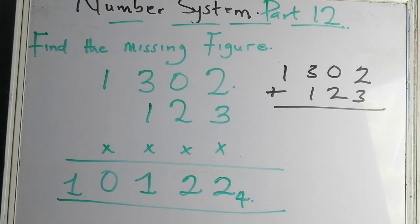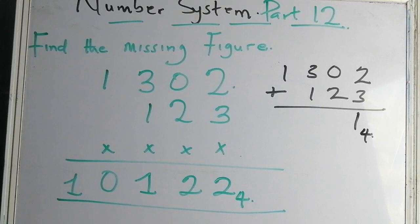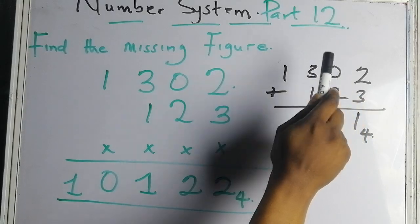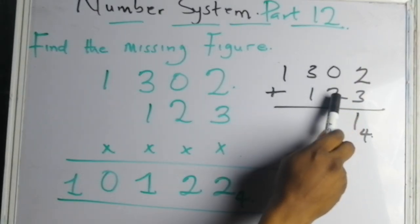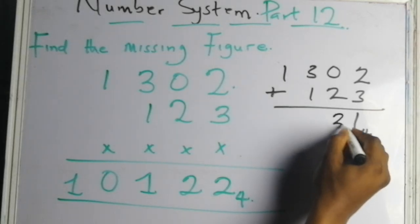Three plus two equals five, and we're working in base four. Five minus four gives us one. How many times can four go into five? One time, with a remainder of one. Write down one and carry that one to the next column. One plus zero is one, plus two is three. Three is not up to four, so write three.